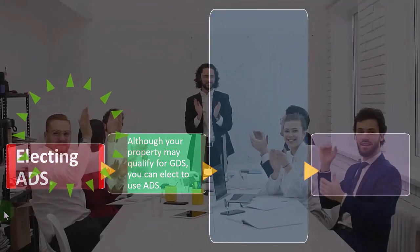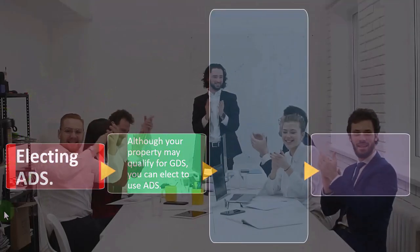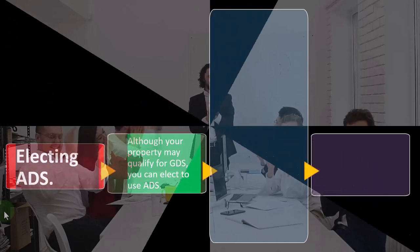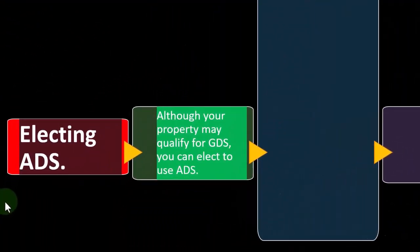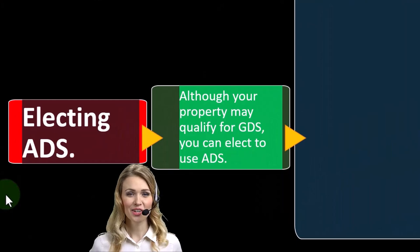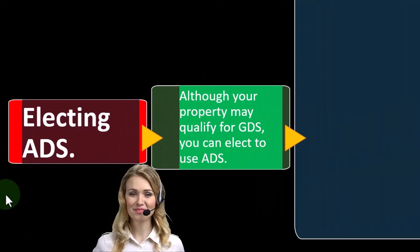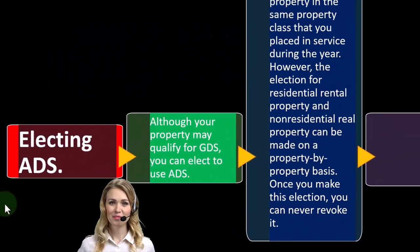So electing ADS. This would be deviating from the general MACRS GDS standard to the ADS, doing it this time not because you're required to, but because you're electing to do that. Although your property may qualify for GDS, you can elect to use ADS.